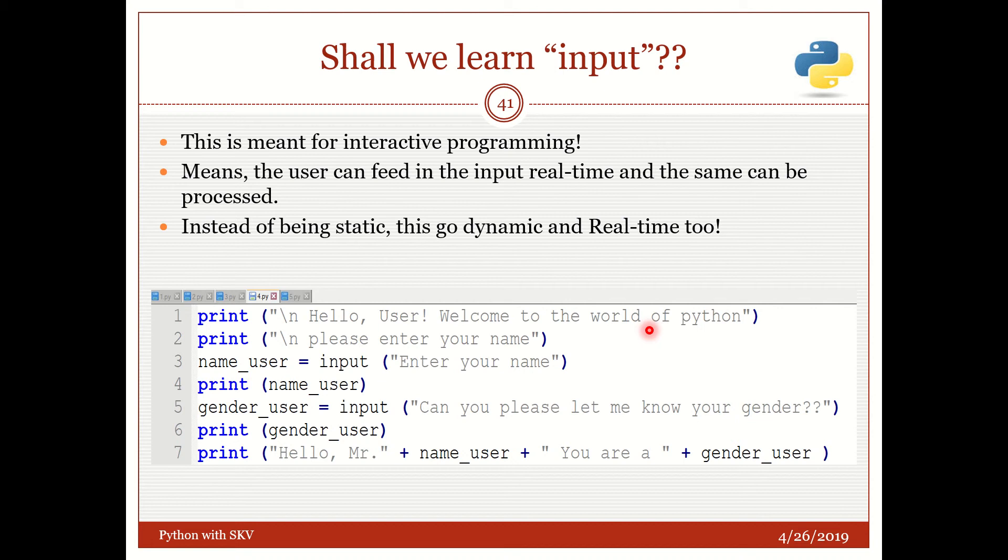Only then that's interactive programming. Otherwise we would not appreciate it. So for that to be done we have got something called as input. So what is it? It's very simple. I'm going to have an example here. Print 'Hello user, welcome to the world of Python'. This will be printed. This is just a print statement like what we have in C programming and the cout in C++.